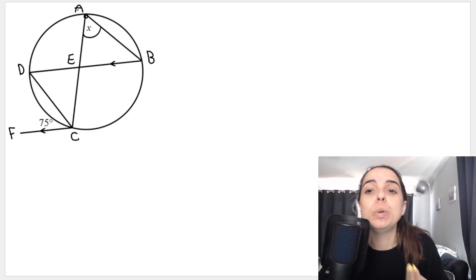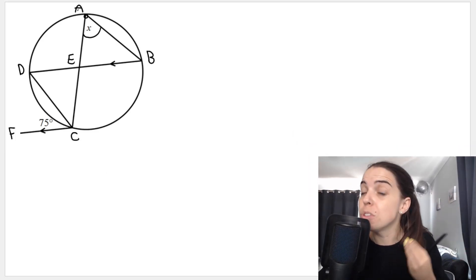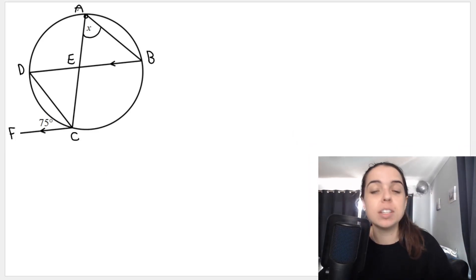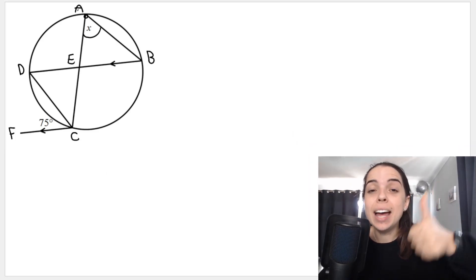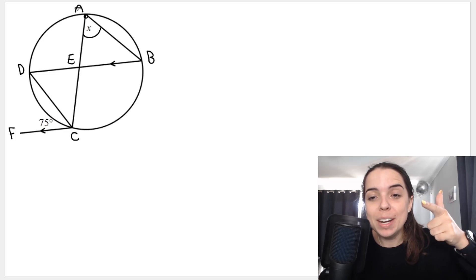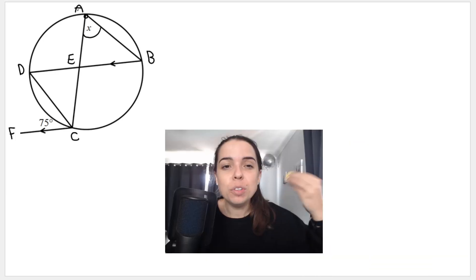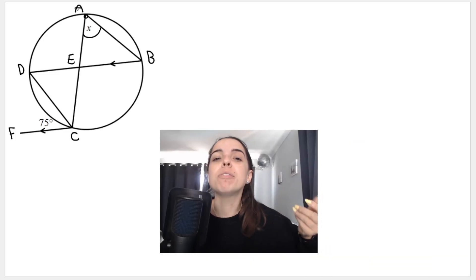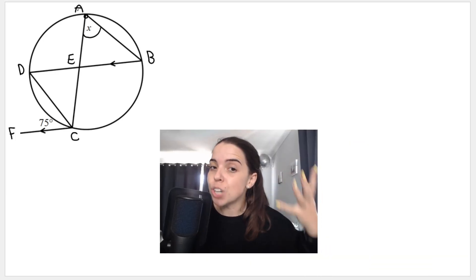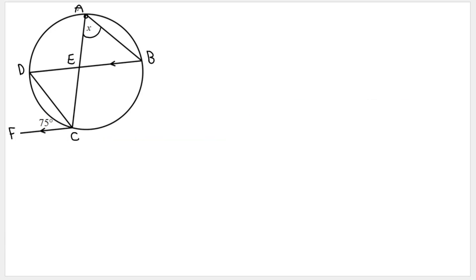If there are parallel lines we are maybe going to use the fun angles, alternate angles, corresponding angles or co-interior angles, and also take a look to see if we have isosceles triangles — but we don't here.